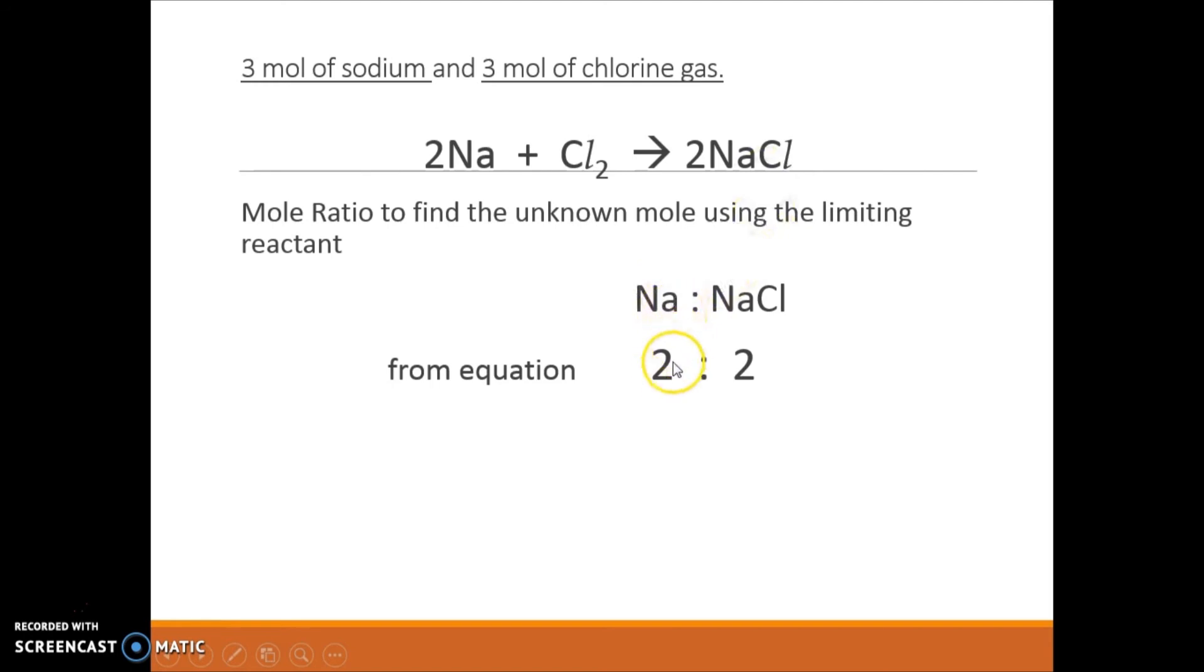From the equation, 2 moles will produce 2 moles of sodium chloride. So since sodium is the limiting reactant, which I am given only 3 moles, I will only produce 3 moles of sodium chloride.